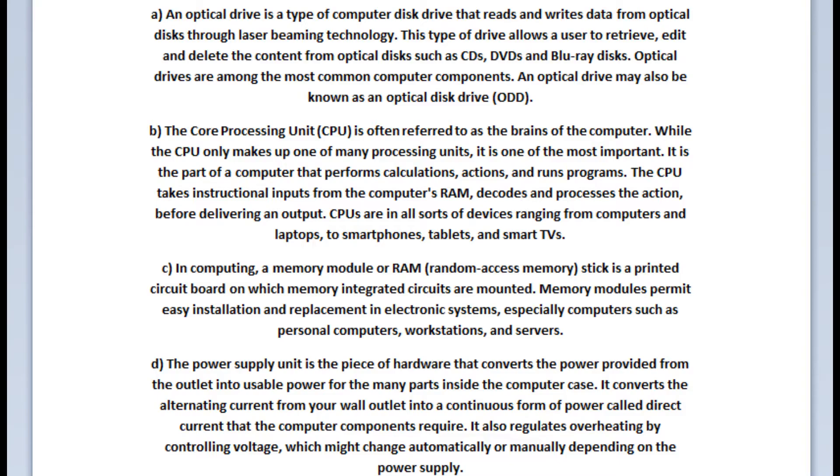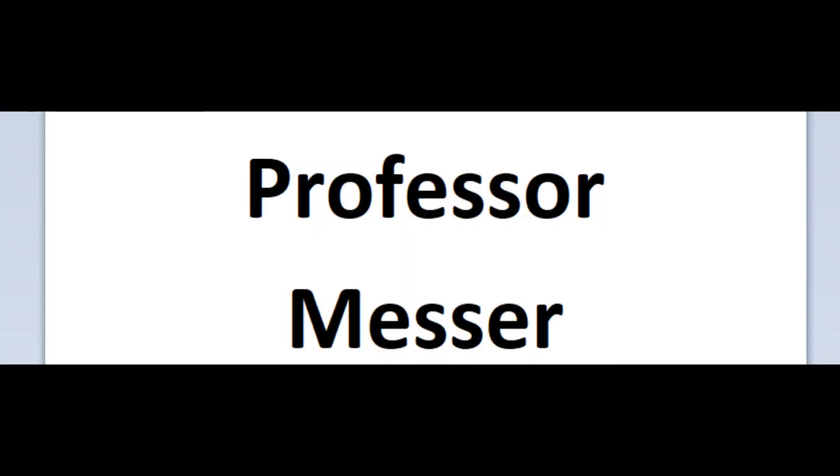The power supply unit or PSU is the piece of hardware that converts the power provided from the outlet into usable power for the many parts inside the computer case. It converts the alternating current or AC from your wall outlet into a continuous form of power called direct current or DC that the computer components require. It also regulates overheating by controlling voltage which might change automatically or manually depending on the power supply you have. Make sure you memorize the acronyms as well. The best source for that is the free courses that you can find on YouTube from Professor Messer. But you can also go to the official CompTIA page and download the exam objectives from there.